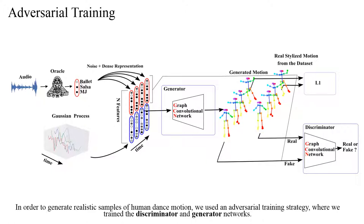In order to generate realistic samples from human dance motion, we used an adversarial training strategy where we train the discriminator and generator networks.